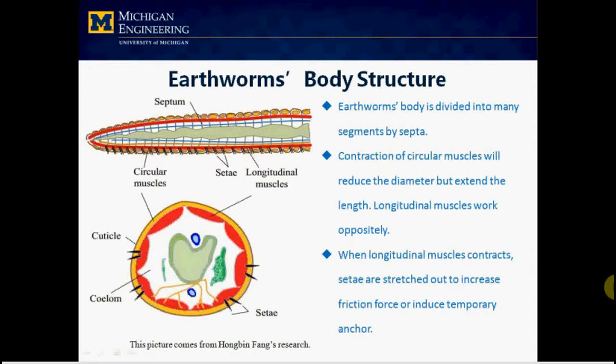The second point is the muscular system of Earthworms consists of circular muscles and longitudinal muscles. When circular muscles contract, the diameter of the segment will be reduced, but the length will be extended. Longitudinal muscles have opposite functions.